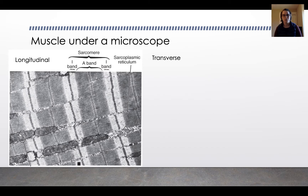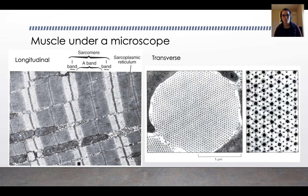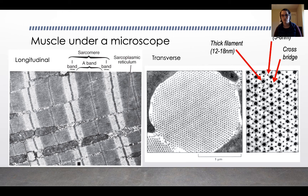Under a microscope, muscle has a banded pattern where you have the I-band and the A-band making up a sarcomere, kind of a muscle length, and then the sarcoplasmic reticulum where the calcium comes from. If we look at a transverse cross-section across the length of the muscle, you'll see a helical pattern where you have thick filaments — the dark circles — and thin filaments, which are the smaller circles.